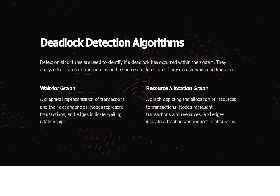Varadhalal will now discuss the deadlock detection algorithm. The detection algorithms are used to identify if a deadlock has happened within the system. They analyze the status of transactions and resources to determine if any circular wait condition exists. There are two types: wait-for graph and resource allocation graph.